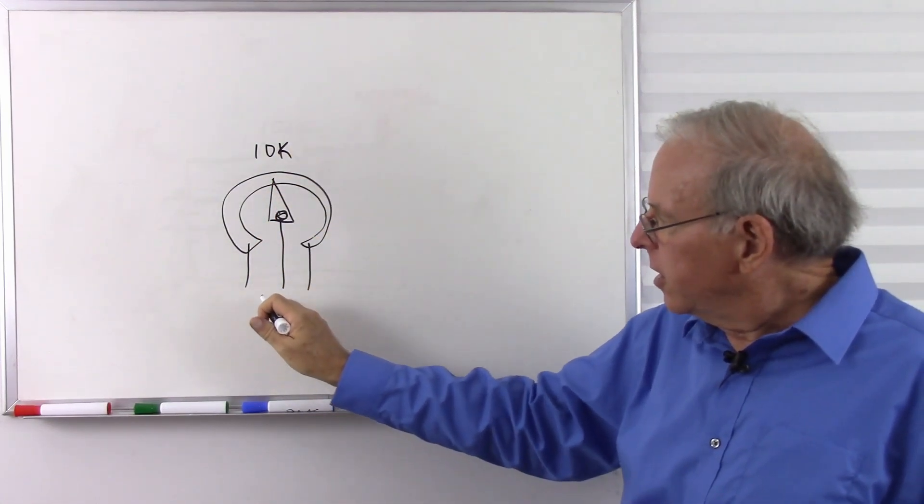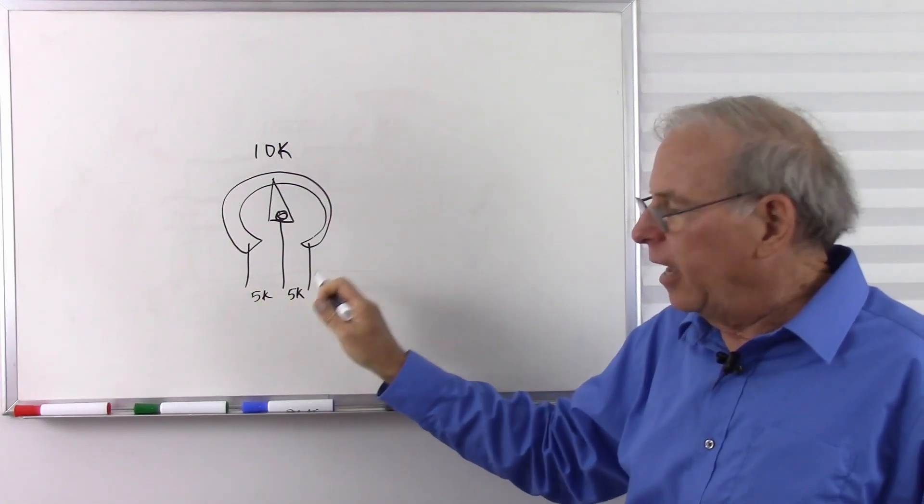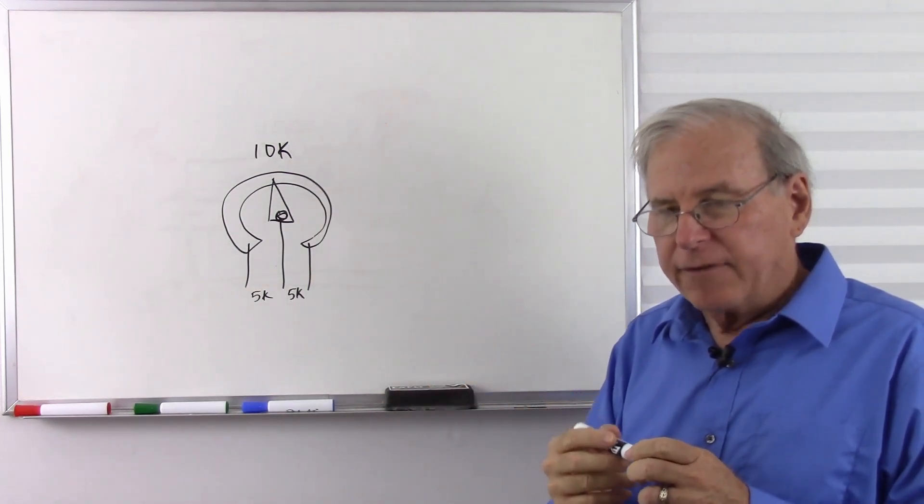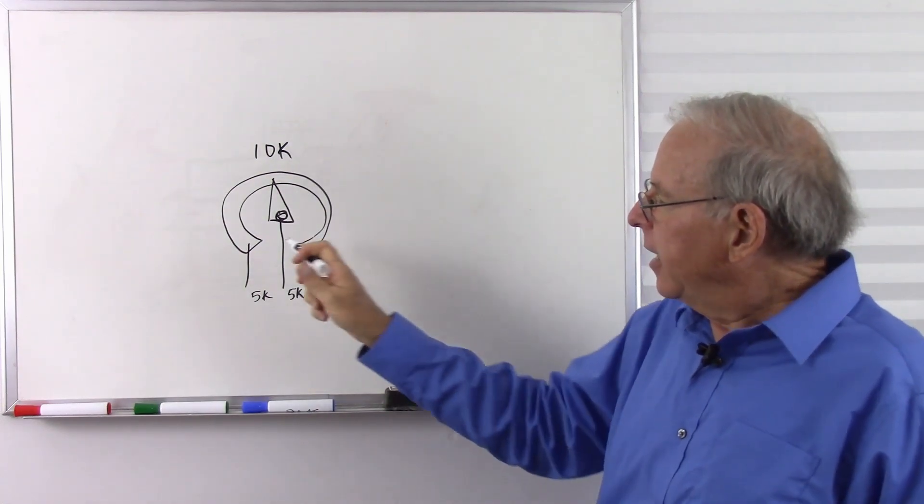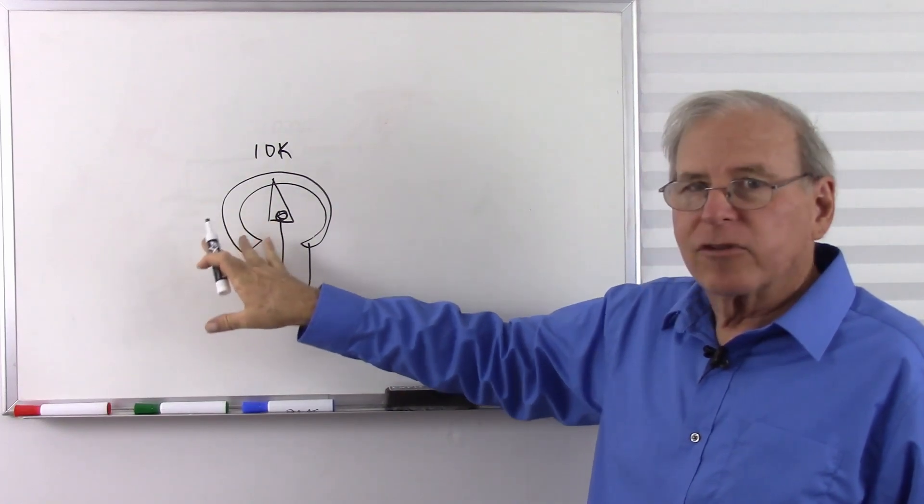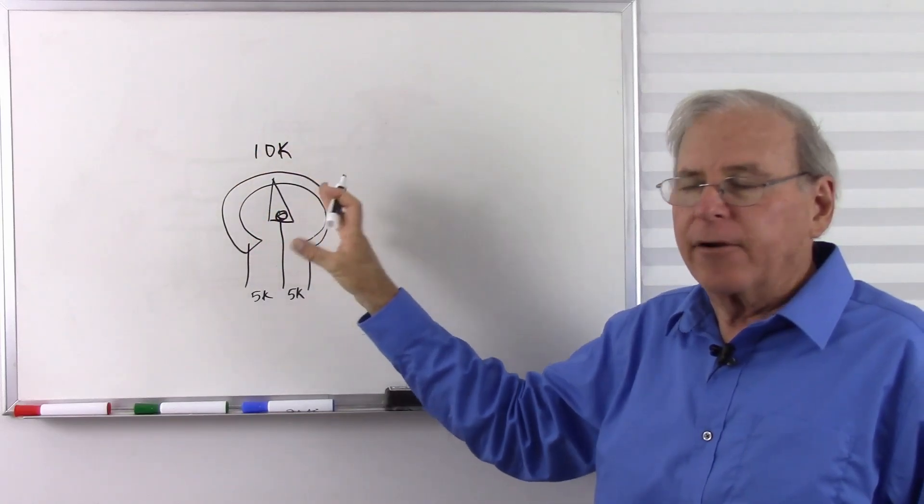So if we put it in the middle, like here, we're going to have about 5k and 5k, assuming this is a linear taper type of potentiometer. If this is a logarithmic taper, also called an audio taper, it will have a track such that we have a greater resistance on one end and it becomes less and less as we go to the other end in a logarithmic pattern.